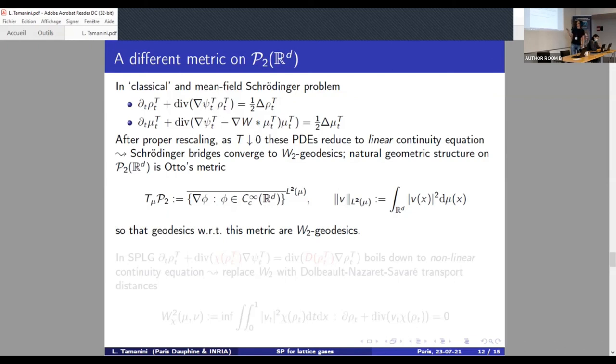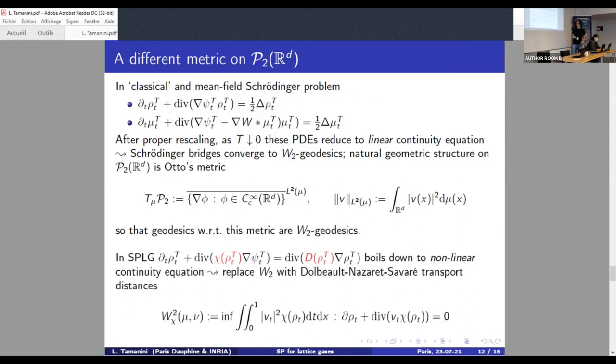So that Schrödinger bridges converge to Wasserstein geodesics, since it is well known that Wasserstein geodesics are linked through continuity equation via Benamou-Brenier formula. And so for both the classical and the mean field Schrödinger problem, it is natural to endow P₂ with the Otto metric. Instead, in the case of the Schrödinger problem on lattice gases, ρ_t and the dual variable ψ are linked by this non-linear PDE that even after rescaling and in the limit capital T goes to zero, here the right hand side vanishes and that's okay, but the non-linearity remains on the left hand side, so that in the end we have a non-linear continuity equation solved in the limit. And this suggests that we have to replace the Wasserstein distance with the class of transport distances introduced by Dolbeault, Nazaret and Savaré by Benamou-Brenier-like formula, but with a non-linear continuity equation constraint.